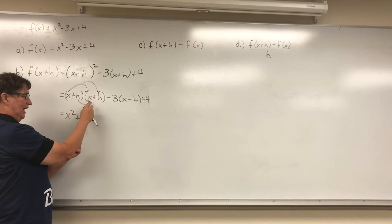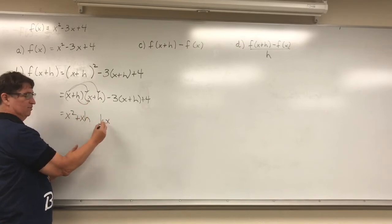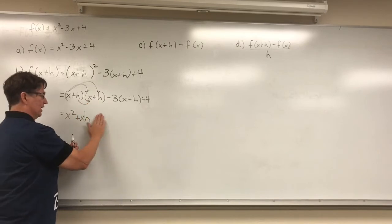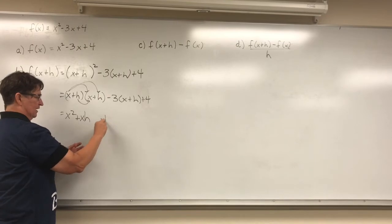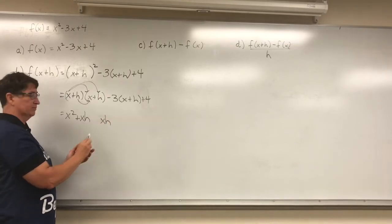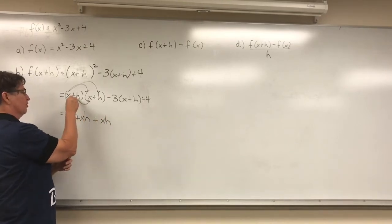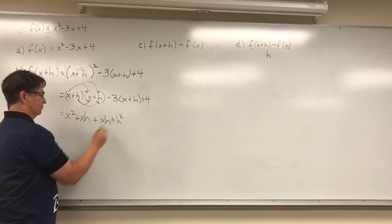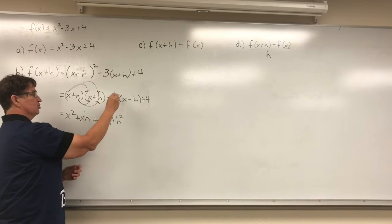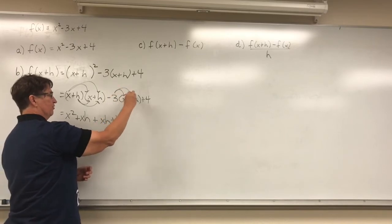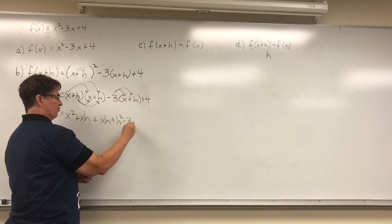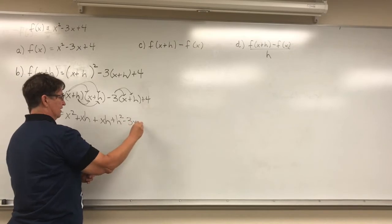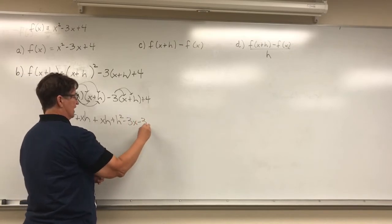I can write this as hx like this, or I can write it as xh. They're the same thing. Then I'm going to multiply the h times the h so that I end up with h squared. Now I'm going to distribute the negative 3 here so that I have negative 3x and negative 3h.